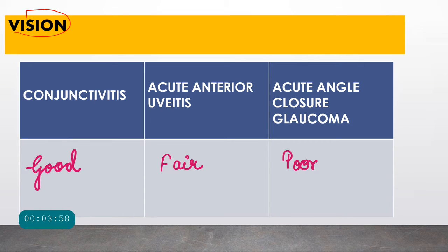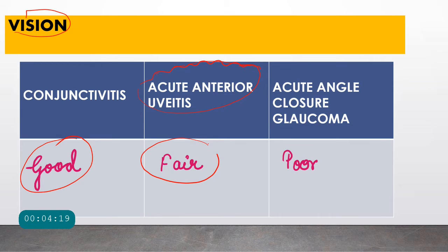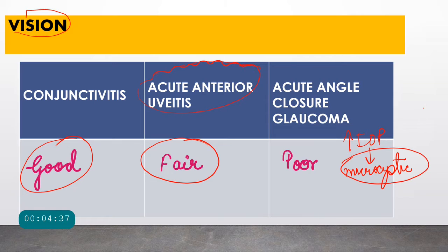Regarding vision: in conjunctivitis, vision is usually very good since only the conjunctiva is involved. In acute anterior uveitis, keratic precipitates on the cornea cause some decrease in visual acuity, though vision remains fair. In acute angle closure glaucoma, raised IOP causes microcystic corneal edema — tiny bubbles visible on slit lamp — resulting in poor vision.